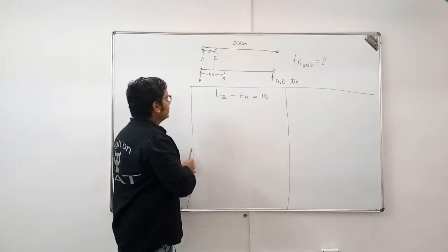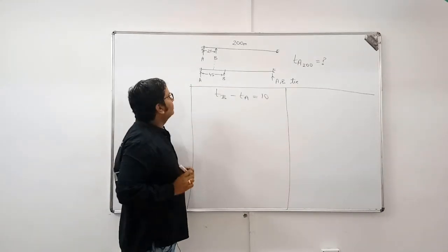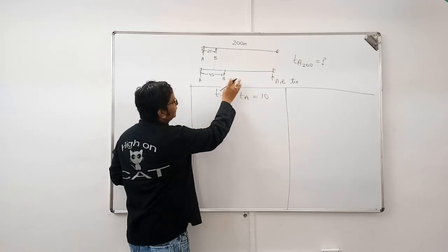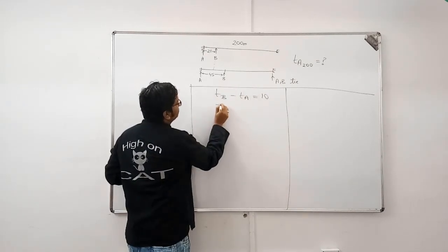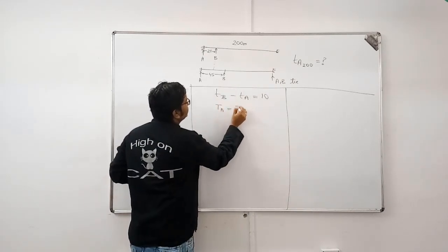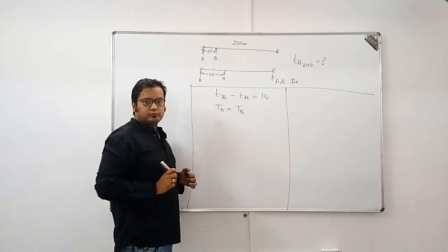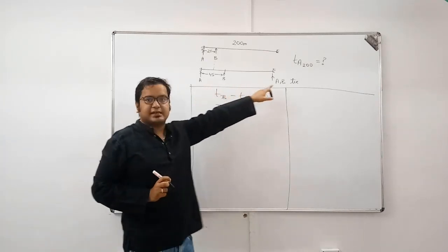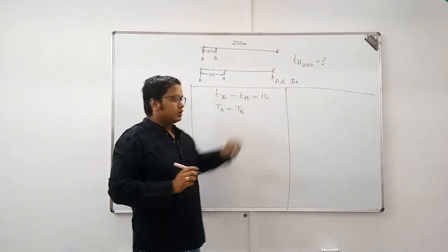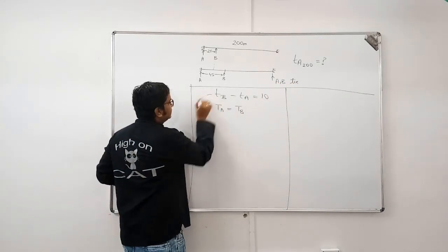TB minus TA is equal to 10. The second equation would be, time taken by A is equal to time taken by B in the second case, because it is a dead heat. Let's start from here.